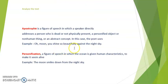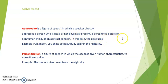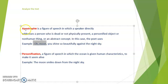Moving to the next slide, we would like to understand the difference between apostrophe and personification, as they are very interrelated expressions. Apostrophe is a figure of speech in which a speaker directly addresses a person who is dead or not physically present, a personified object or non-human thing, or an abstract idea. For example: "O moon, you shine so beautifully against the night sky" — talking directly to the moon is apostrophe.